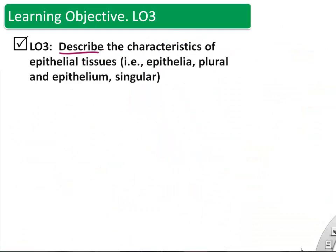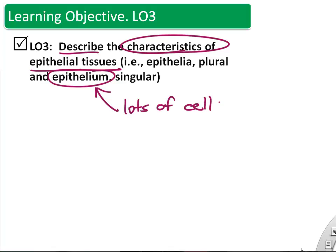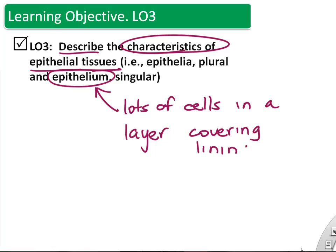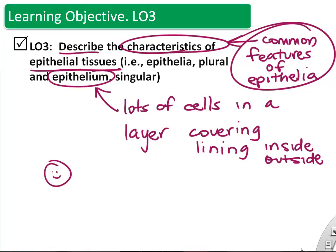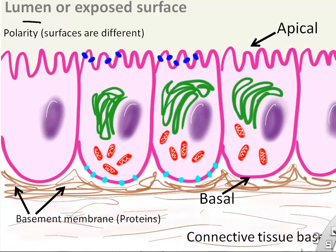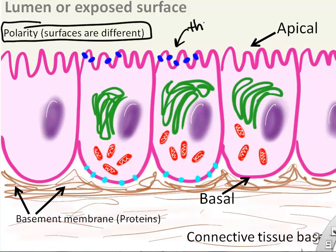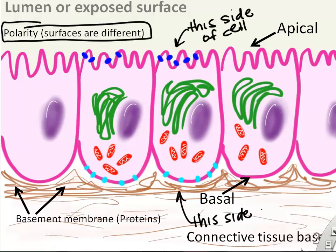The next learning objective is to describe the characteristics of epithelial tissues. Basically you have lots of cells in a layer forming a cover or lining. All epithelia share certain characteristics no matter where in the body — stomach, heart, or skin. First, the cells have polarity: one side of the cell is different from the other side. One side is exposed to different things than the other side.